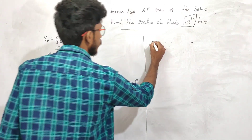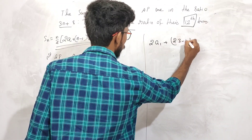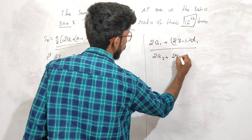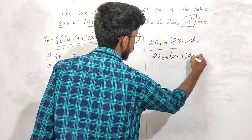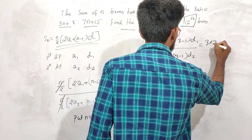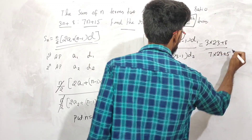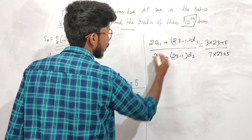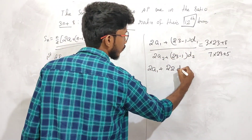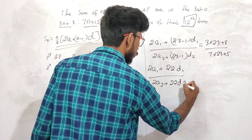Substituting n equals 23, we get 2a1 plus 22d1 divided by 2a2 plus 22d2, which equals 3 into 23 plus 8 divided by 7 into 23 plus 5. This simplifies to 2a1 plus 22d1 divided by 2a2 plus 22d2.